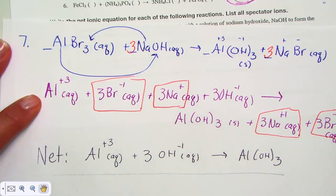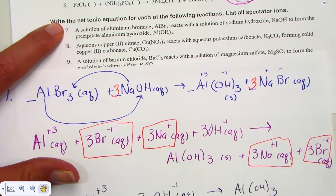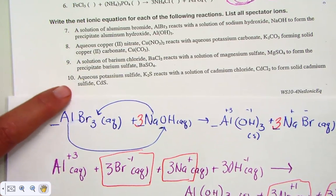The net ionic equation has been written, and I've identified the spectator ions. That models number seven for you, leaving you eight, nine, and ten.